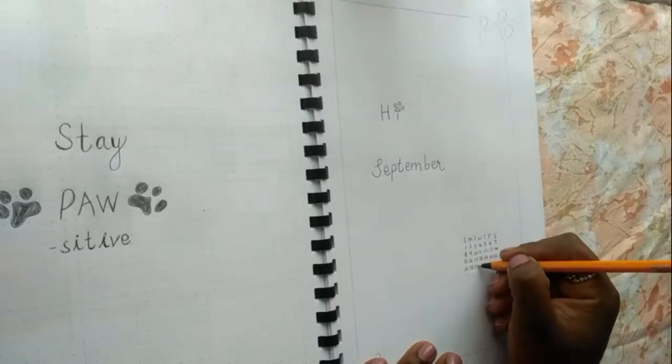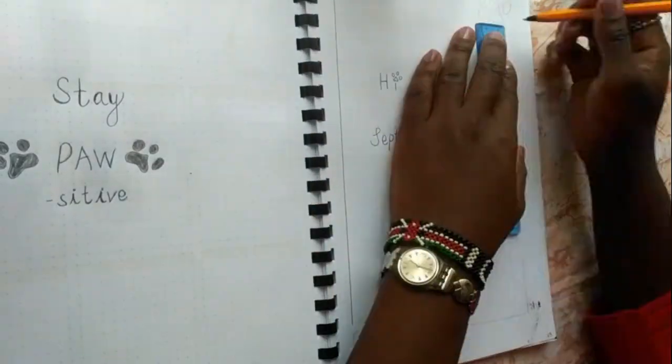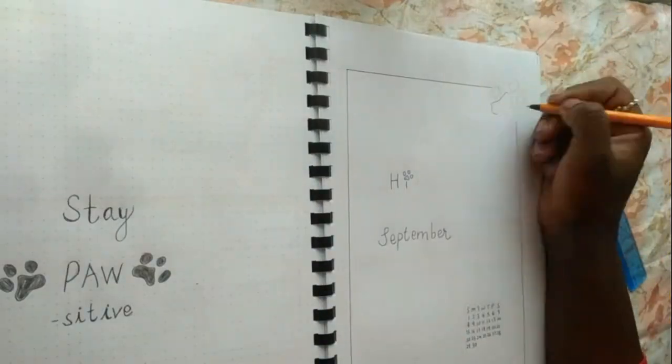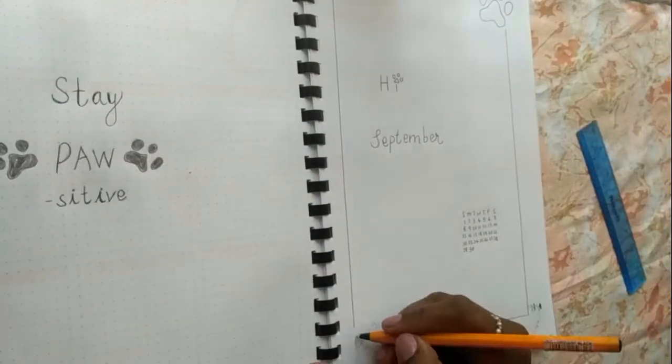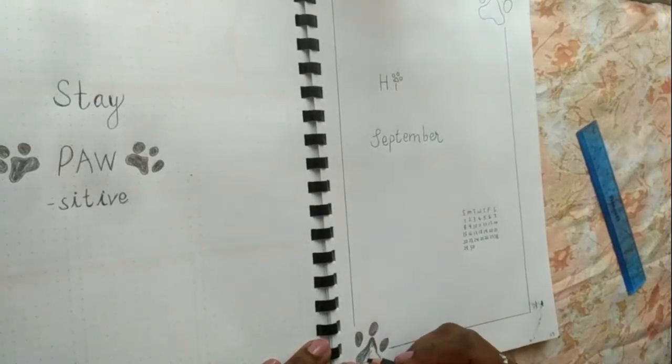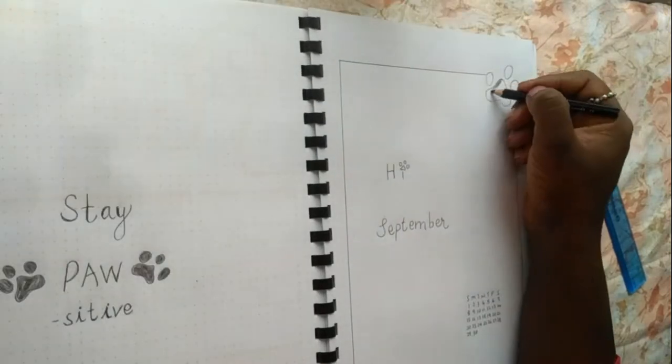For the cover pages, I have a positive quote from Pinterest, then the September title and a mini calendar. Of course, I'm adding in the Paw Patrol detail or just paw prints to make it easy. I wanted an easy theme, something I can do and also inspire others to do.